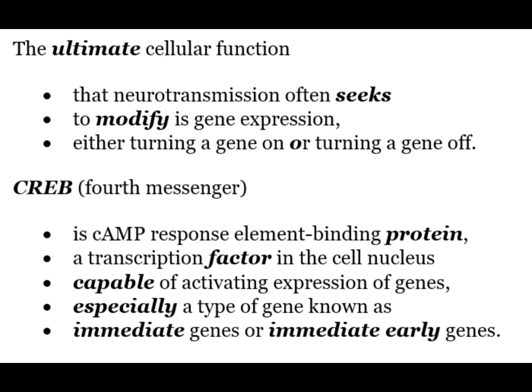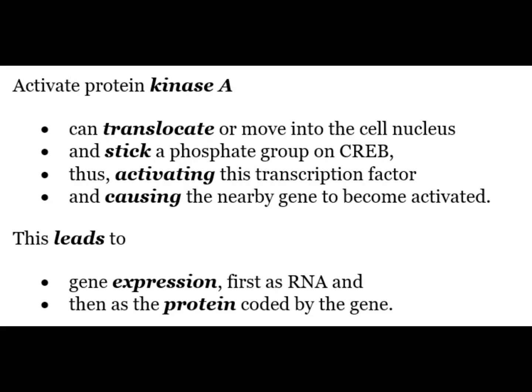The fourth messenger CREB is a cyclic AMP response element binding protein, a transcription factor in the cell nucleus capable of activating expression of genes, especially immediate early genes. The activated protein kinase A can translocate into the cell nucleus and attach a phosphate group to CREB, thus activating this transcription factor and causing the nearby gene to become activated. This leads to gene expression first as RNA and then as the protein coded by the gene.